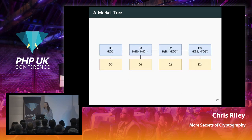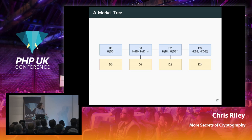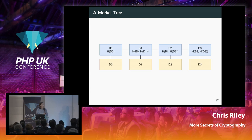An alternative is a linked-list style Merkle structure. The first chunk is hashed directly. Each subsequent chunk hashes its data combined with the hash of the previous block. This is very similar to how Git works: when you commit, Git takes the hash of the parent commits combined with the commit message and file hashes, producing the commit hash for the new commit.